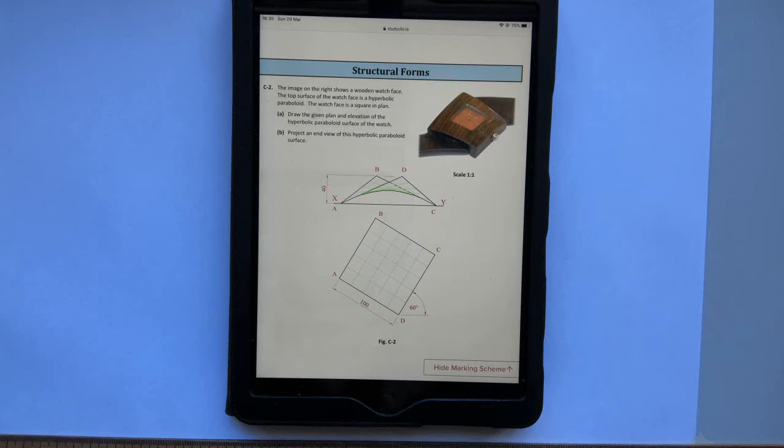The image on the right shows a wooden watch face. The top surface of the watch face is a hyperbolic paraboloid and the watch face is a square in plan.